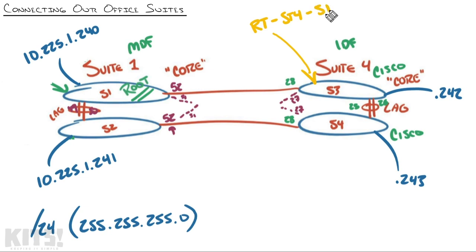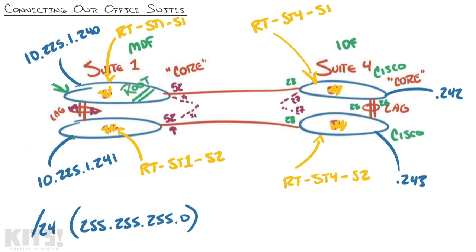So this switch will become RT-ST4 for suite number four, dash S1, because it'll be the first one in that suite. Now you might be going, what about its old name? It's gone. I just put those on there to talk about them. That wasn't the official naming convention. This guy down here will become RT-ST4 dash S2, because it's the second switch in that suite. And these guys follow suit. RT-ST1, because it's suite number one, S2 on the bottom. And RT-ST1-S1 on the top.